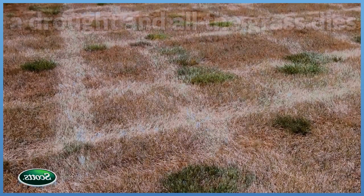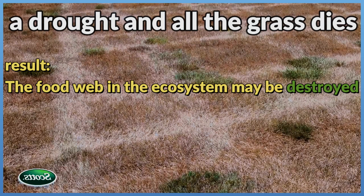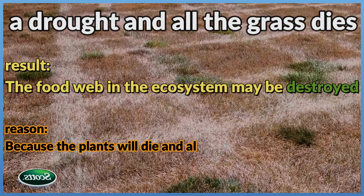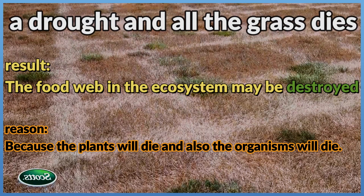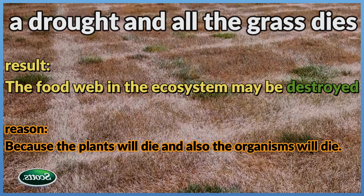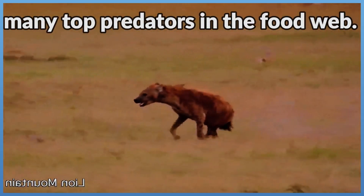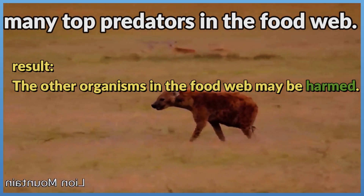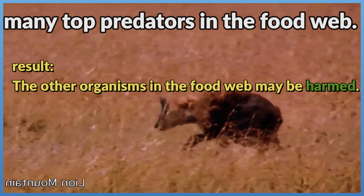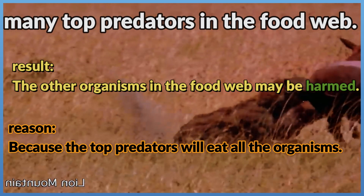There is a drought and all the grass dies. Result: The food web in the ecosystem may be destroyed. Reason: Because the plants will die and also the organisms will die. There are many top predators in the food web. Result: The other organisms in the food web may be harmed. Reason: Because the top predators will eat all the organisms.